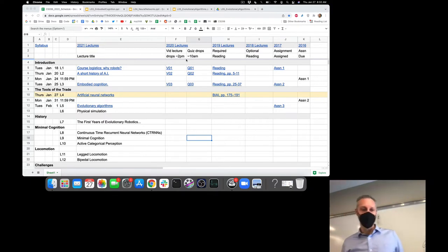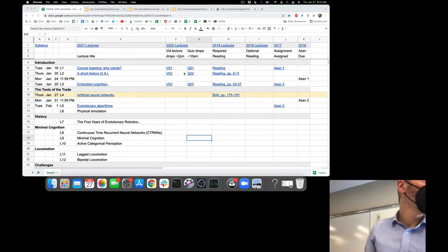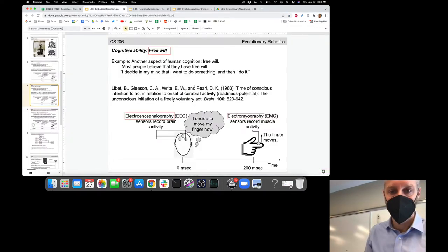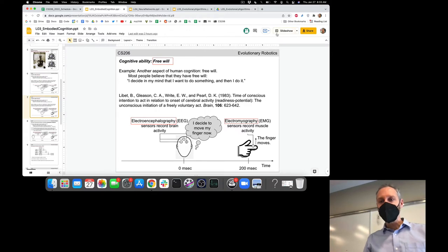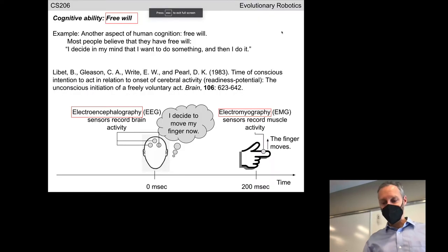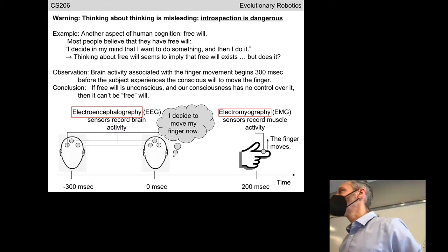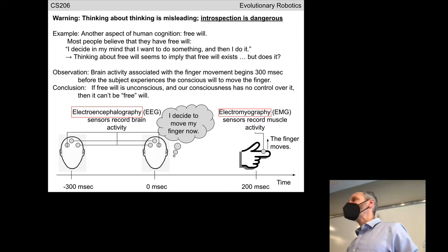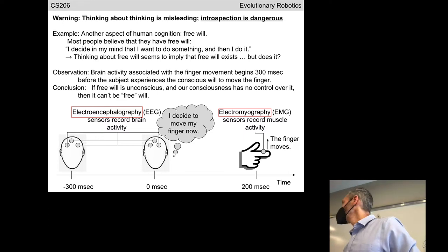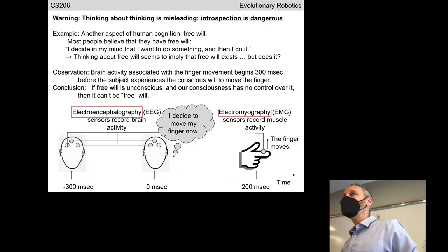Okay, any other questions about logistics? All good? Back to the fun stuff — embodied cognition. We ended last time with this small matter of determining whether we all have free will or not. This is not a philosophy of mind course. The reason we are talking about the Libet experiment here is this is probably the best reminder that thinking about thinking is misleading. Any time over the entire history of AI and robotics, someone sits down to try and create an intelligent machine, it is very difficult not to be guided by your intuition.